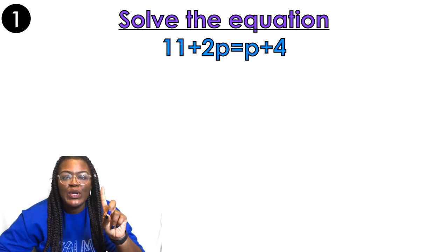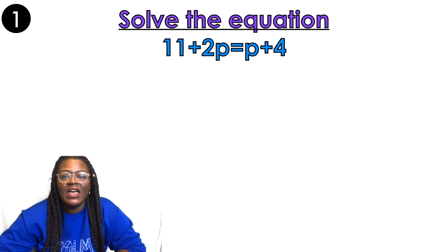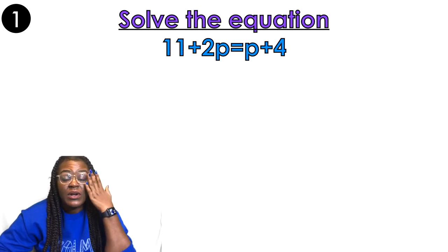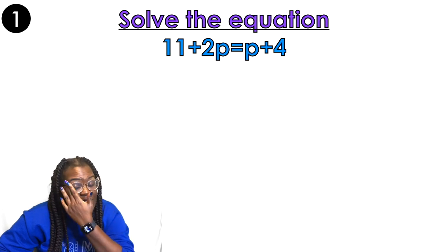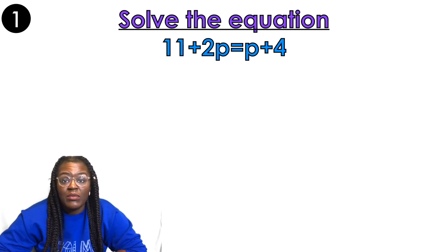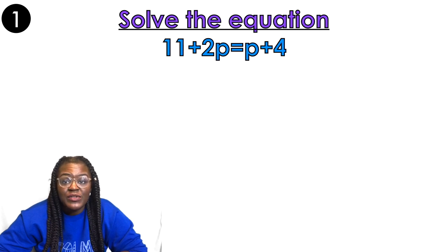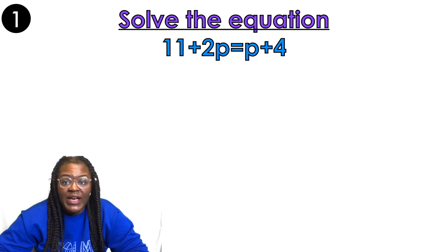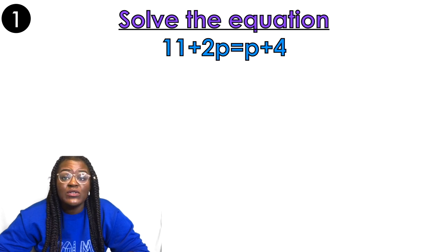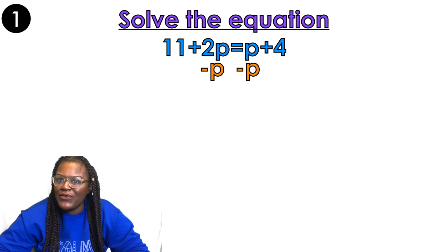Example número uno. I have 11 plus 2p equals p plus 4. I don't have any distribution in this problem, so I'm going to skip that step. I'm going to move my variables to be on the same side. I'm going to choose to move the positive p over to be with the 2p, so I'm going to subtract p from both sides.